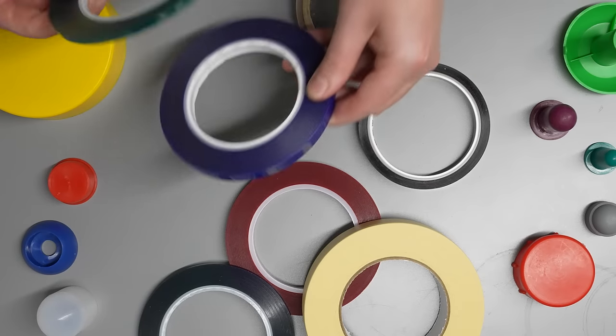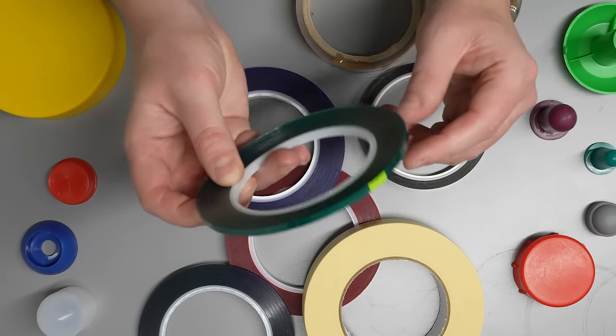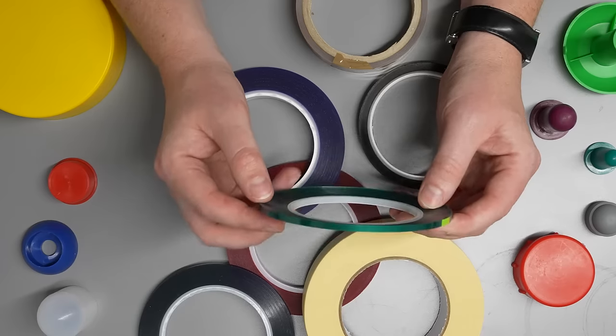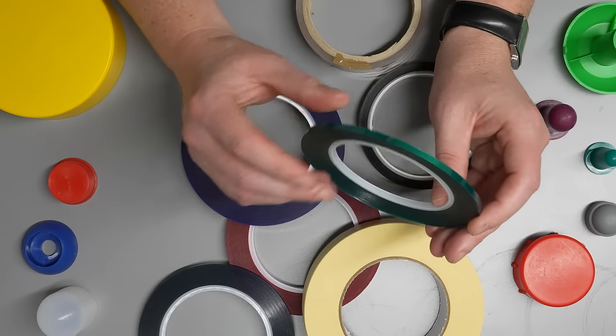Our green polyester tape is the perfect masking solution during powder coating. This comes in a range of different widths and sizes.